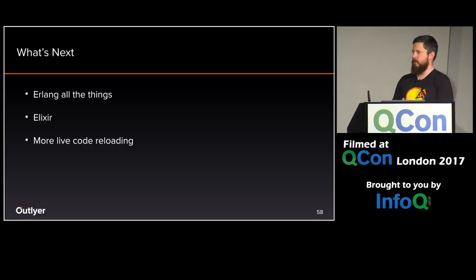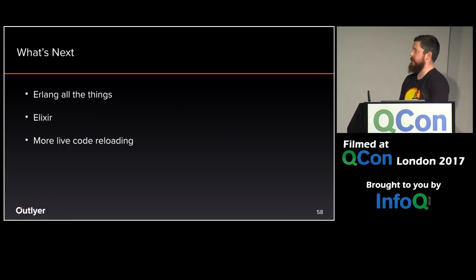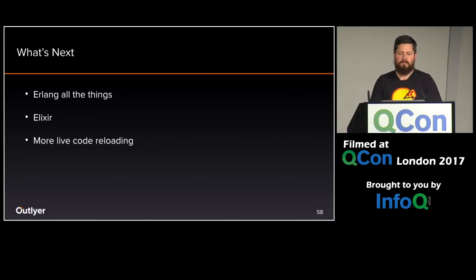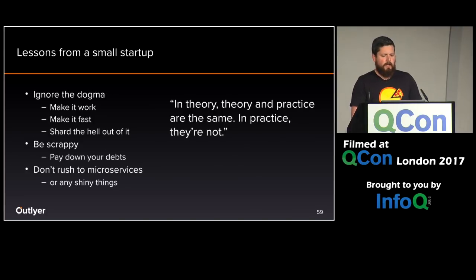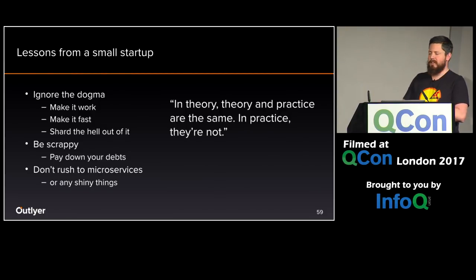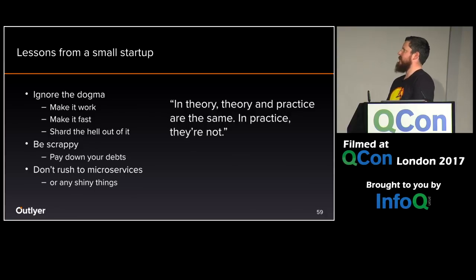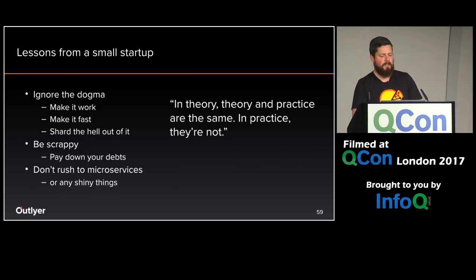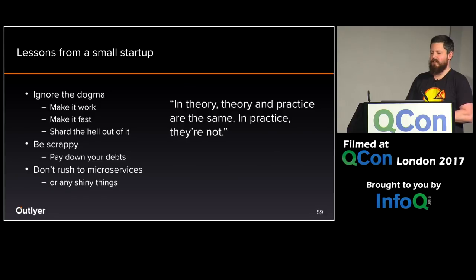What's next? We're going to Erlang all of the things. Specifically, all the backend workers will eventually be Erlang, and we'll probably change the APIs too — getting rid of all the Node.js and using Erlang and Elixir for those things. I really want to play around with live code reloading. Closing up on the startup stuff: if you're doing a startup, try to ignore the dogma as much as possible. Just get on with it — get it working, make it fast, and shard the hell out of it. Be scrappy, you need to get stuff delivered, but come back and pay your technical debt. Don't rush to the shiny things — not every new technology is a good fit.